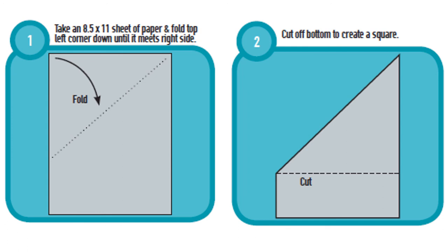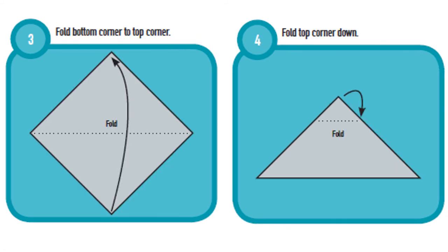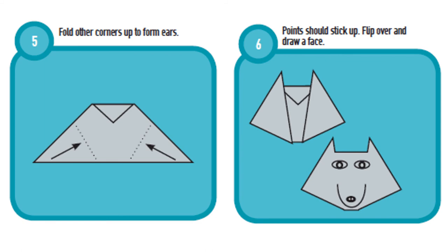You fold the left corner down until it meets the right side. In step two, cut off the bottom below the area that was folded, and you will have created a square. In step three, first lay your paper so it looks like a baseball diamond, then fold the top all the way down to the bottom and crease it. In step four, fold the top corners down — just judge a little part of it and fold. In step five, fold the corners up to form the ears; try to judge so that it is even. In step six, the point should stick up after you have folded it. Now you need to flip it over and you can draw a face on it.